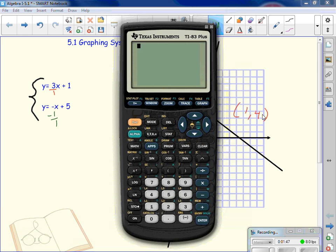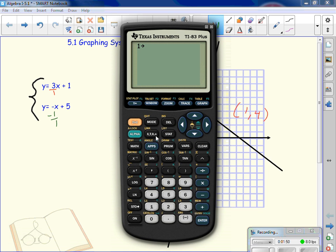If I look in the calculator, which one is my x value? 1. So I'm going to store 1 into x. I stored 1 into x. 3x plus 1 gets me 4. Negative x plus 5 gets me 4. That is the only point that x will give me the same y value. Anything else that I pick.